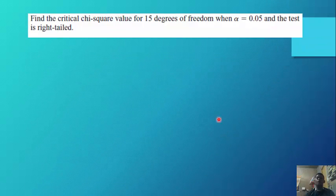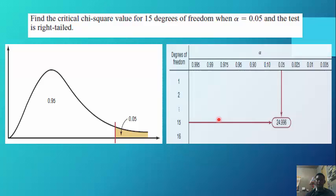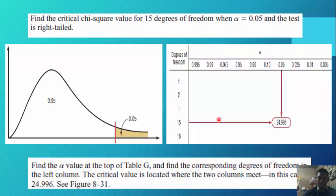Example — find the critical chi-square value for 15 degrees of freedom when alpha equals 0.05 and the test is right-tailed. In the table, the corresponding degrees of freedom in the left column is 15. The critical value located where the two columns meet — degrees of freedom 15 and alpha 0.05 — is 24.996.